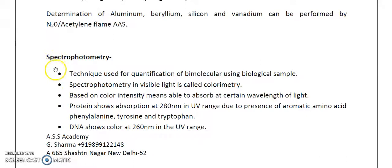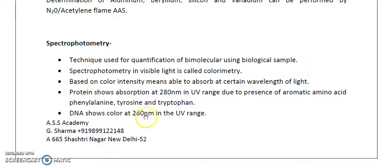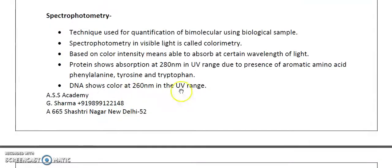Spectrophotometry is basically a technique used for quantitation of biomolecules using biological samples. When spectrophotometry is performed in visible light it is also called colorimetry, because the development of color is used as a criterion for absorption based on color intensity at a specific wavelength called lambda max. Proteins show maximum absorption at 280 nm in the UV range due to aromatic amino acids such as phenylalanine, tyrosine, and tryptophan, while DNA shows absorption at 260 nm in the UV range.